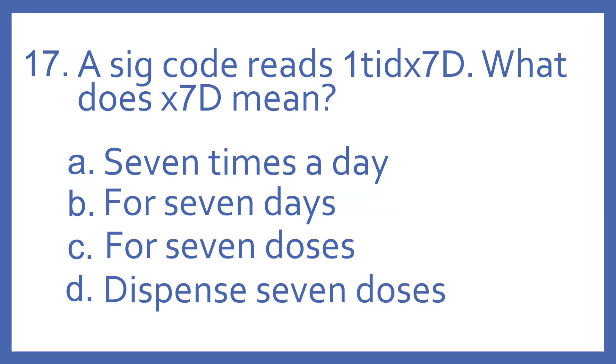Number 17, a SIG code reads 1 TID times 7D. What does times 7D mean? A, 7 times a day. B, for 7 days. C, for 7 doses. Or D, dispense 7 doses. And the answer is B, for 7 days. Times 7D means for 7 days. And the complete SIG code would mean 1, 3 times a day, for 7 days. 1 TID times 7D.